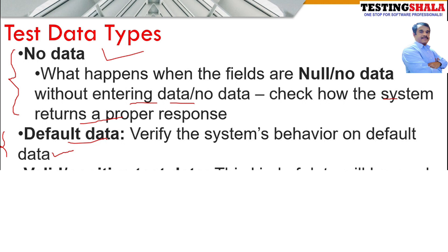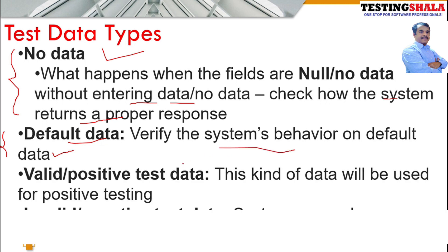The second type is default data. When we try to operate the application using default data, we validate whether the system behaves appropriately or not. The third type is valid or positive data, where we enter positive data in order to test the application. This is positive testing — a positive flow scenario where we provide positive data and check the application.